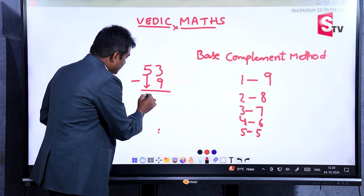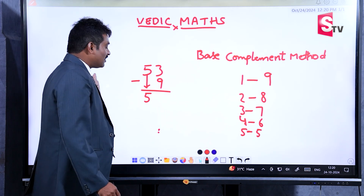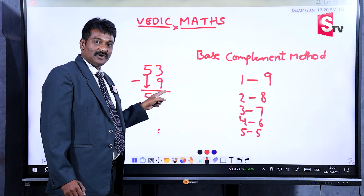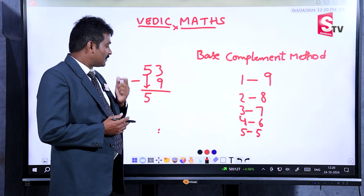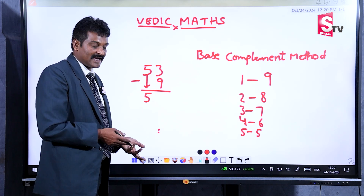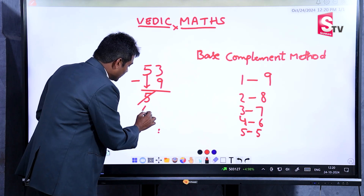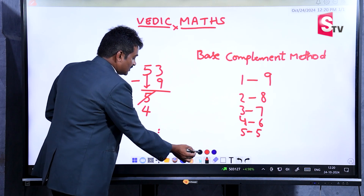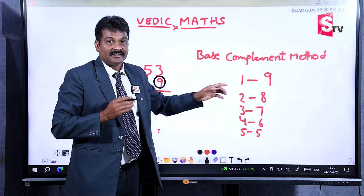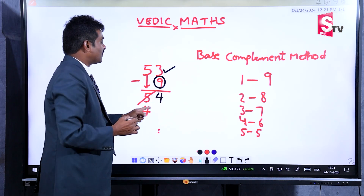What is the first digit here? 5. I drop it as it is. We do subtraction from left to right. Now, 3 minus 9 — 3 is a small number, 9 is a big number, so it is not possible. Whenever it is not possible, we need to cut the number immediately. Write the number below 5, which is 4. Then check the down number: 9. The complement of 9 is 1. Add this 1 to the top number 3 — answer is 4. Your final answer is 44.